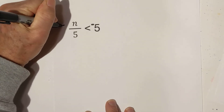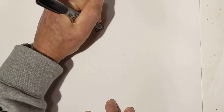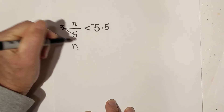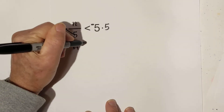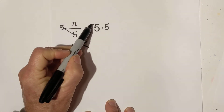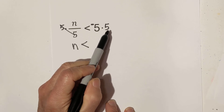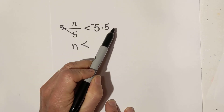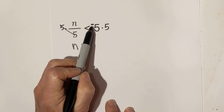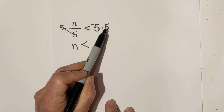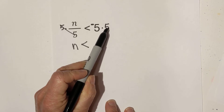We need to get n by itself. We have a division, so we're going to multiply each side by 5. These cancel, the n comes down, and it's less than negative 5 times 5. Now you are not multiplying or dividing each side by a negative number. Just because you have a negative number on this side, do not flip the sign — it's a positive number you're multiplying by.